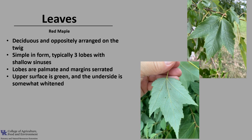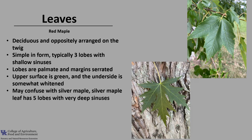The upper surface of the leaf is green and the underside is somewhat whitened. In Kentucky, the other maple you may confuse with red maple based on the leaf is silver maple, which is also sometimes referred to as water maple. As you can see, the silver maple leaf has five lobes with very deep sinuses, as compared to the red maple.